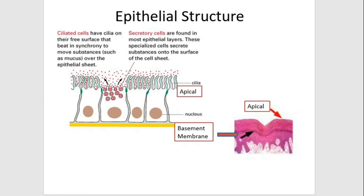In secretory cells, secretory granules occupy the apical part, making it easier to release substances through the apical surface. Regarding polarity of the cytolemma, the apical part contains evaginations such as microvilli and cilia. The basal part does not contain microvilli, but sometimes makes evaginations with mitochondria between them — a pattern called basal striation.